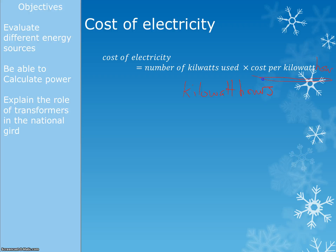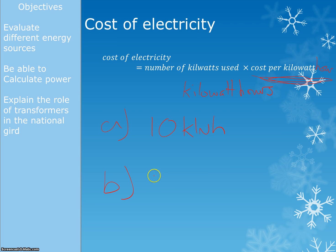The cost per kilowatt hour will always be given to you. The number of kilowatt hours may have been calculated in the previous part of the question, or they might give it to you. If part A asks you to calculate kilowatt hours and part B asks for the cost, and you can't do part A, just make up a nice number — say 10 kilowatt hours — so you can still calculate an answer for part B using that value.